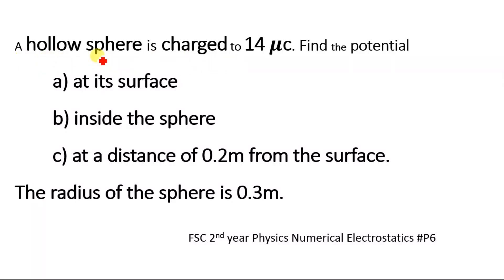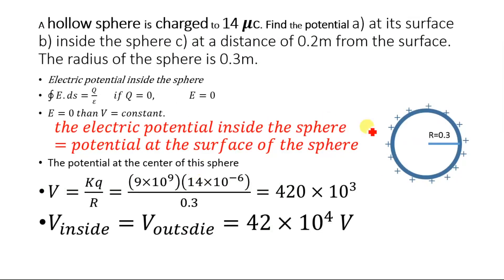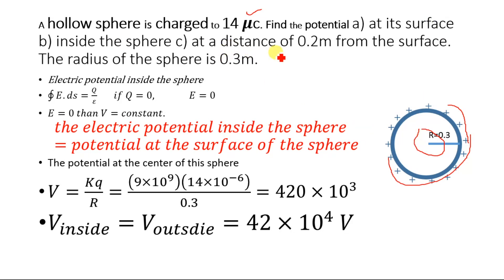Today we will solve a numerical from the FSC second year physics book. We will determine the electric potential at the surface of a hollow sphere, inside the hollow sphere, and at a distance of 0.2 meters from the surface. The charges distributed over the surface of this hollow sphere are 14 micro coulombs. The radius of this sphere is given as 0.3 meters.